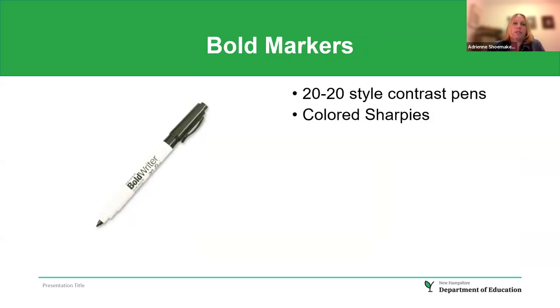Another low-tech item is a bold line marker — those 20/20 style contrast pens. These can be purchased through Maxiades or Amazon, along with colored Sharpies.